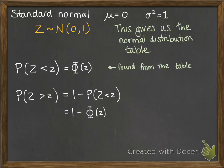We've also got, if the probability of z is greater than that small value of z, we'd have to do 1 minus the probability that it was less than, so that would be 1 minus Φ(z). That's also written above the table in your formula book, so you can be reminded of that.